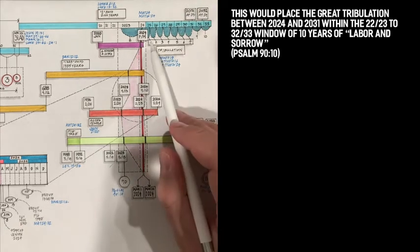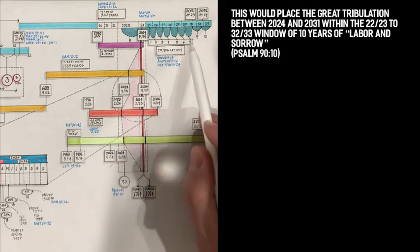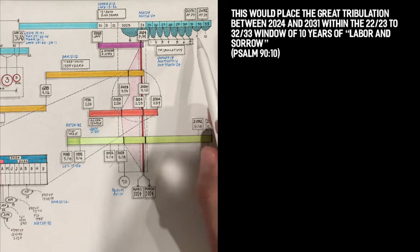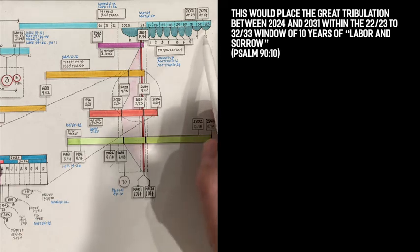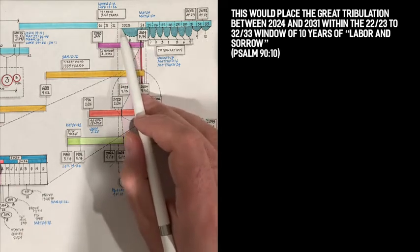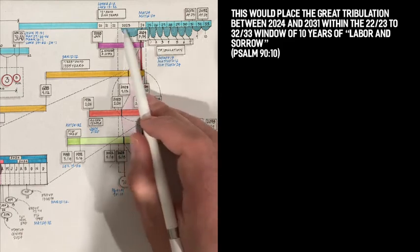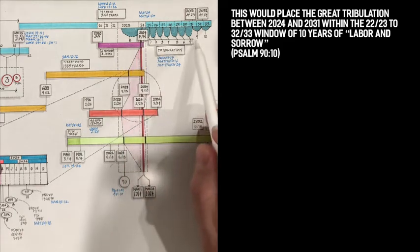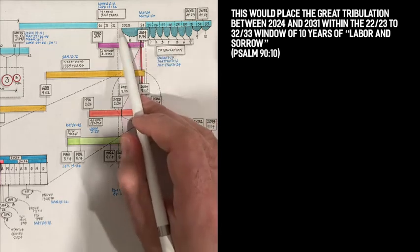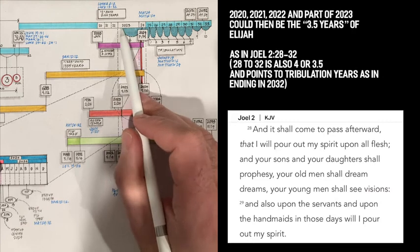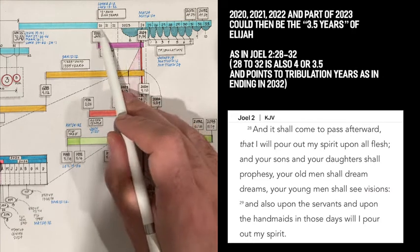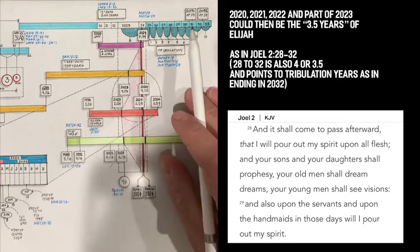So if that's the case, we have the seven years of tribulation shifted over into the middle of the 10 years of labor and sorrow, leaving us two years in the end, nine to kind of conclude it, and then a final year to 33 for the millennium to be fully set up. This also gives us then a first or eighth year between 23 to 24. So just please take a look at the chart. It will make a little more sense. It also is preceded by 2020, 21, 22, and halfway into 23, or part of it, as the three and a half years of Elijah.